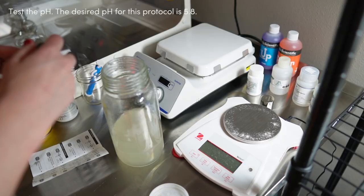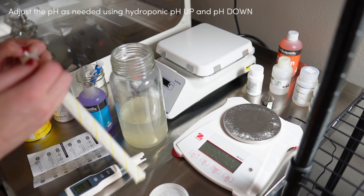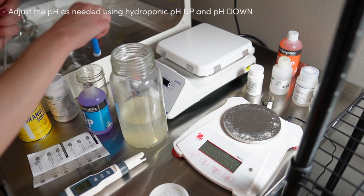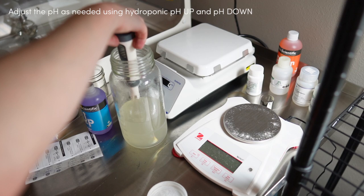So then I just fill the container up to the half a liter mark, or 500 milliliters, and I test the pH. I want it to be around 5.8 for this protocol. Every protocol will be a little different, but it's usually around 5.7 or 5.8 where you want the pH of the media to be. So mine was a little low, it was in the high fours. So what I'm doing here is just using basic hydroponic up to increase the pH of my media to get it to 5.8.